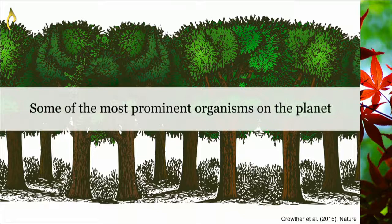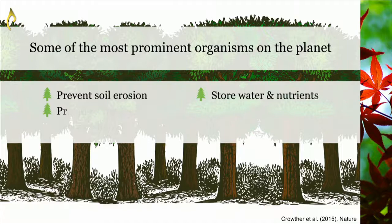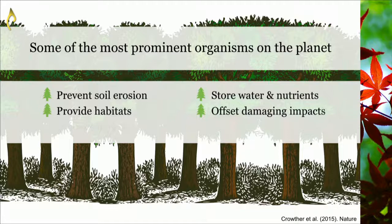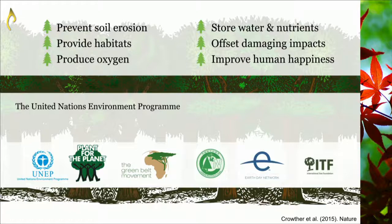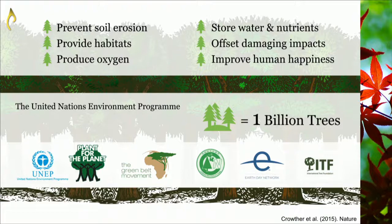Trees are some of the most prominent organisms on the planet. They prevent soil erosion, store water and nutrients, provide habitats for thousands of plants and animals, help offset climate change by absorbing CO2, produce oxygen that we need to breathe, and directly improve human happiness and well-being. Because of all these benefits, the UN Environment Program and other organizations have invested huge amounts of time and money to plant one billion trees, but the impact of this effort is uncertain because until recently no one knew how many trees there were to begin with.